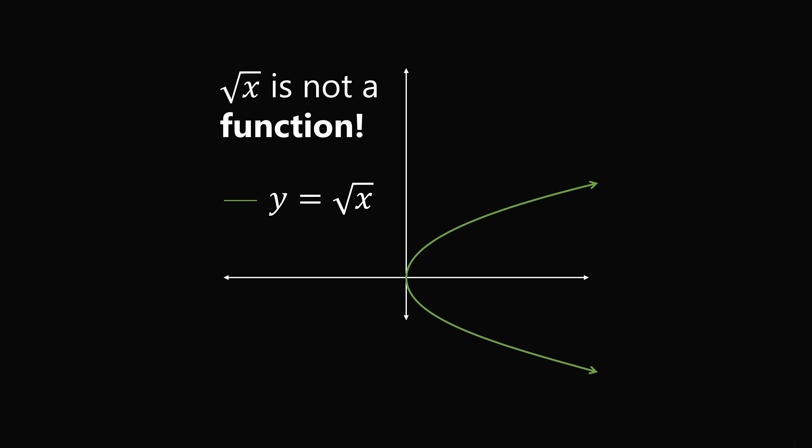By the vertical line test, we can see that every single x value greater than 0 is being assigned to two y values. A function has to assign every single x value to one y value. So how can we fix this?